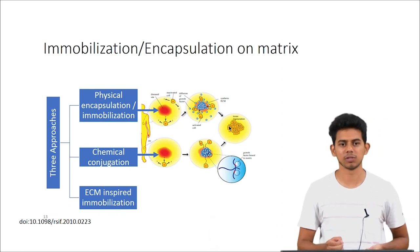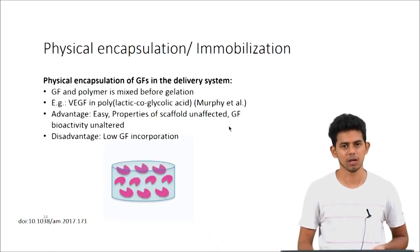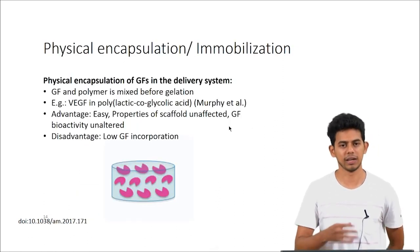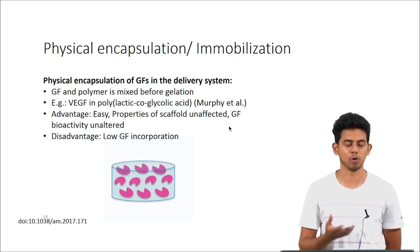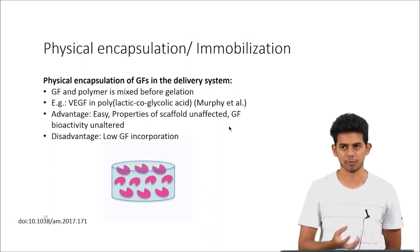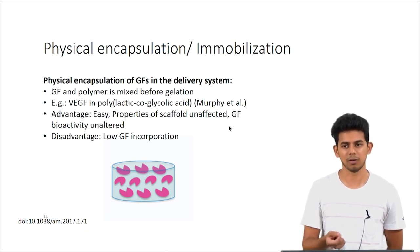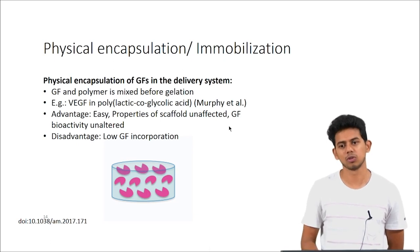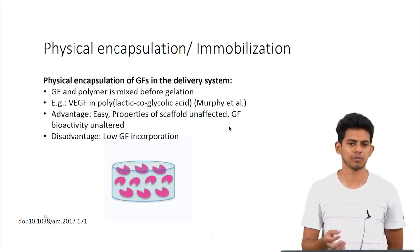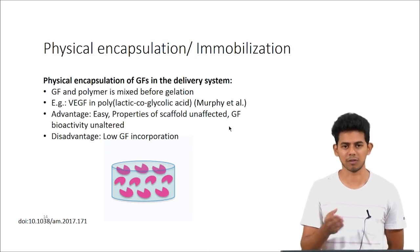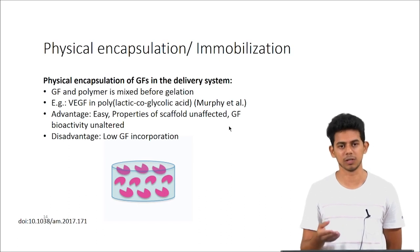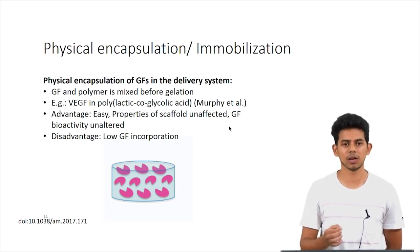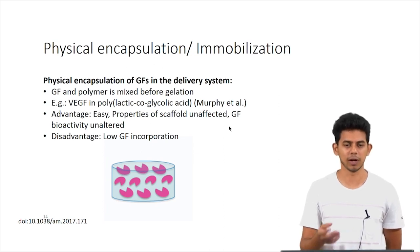Looking at physical encapsulation techniques: the first is physical encapsulation by mixing the growth factor in a polymer before its gelation, so that the growth factors are trapped inside the polymer and you can transplant it. The advantage is it is easy to make and the properties of the scaffold and growth factors are not greatly affected. The disadvantage is that the loading capacity of growth factors into these polymers is quite low.